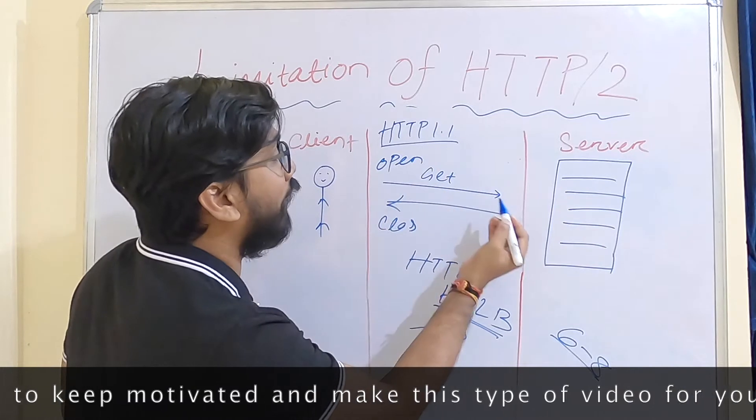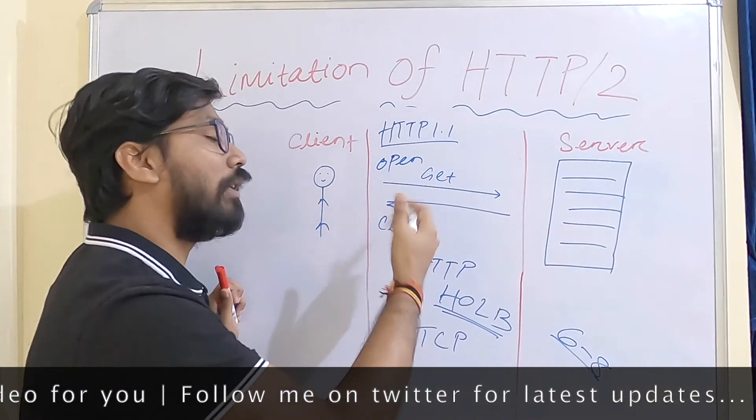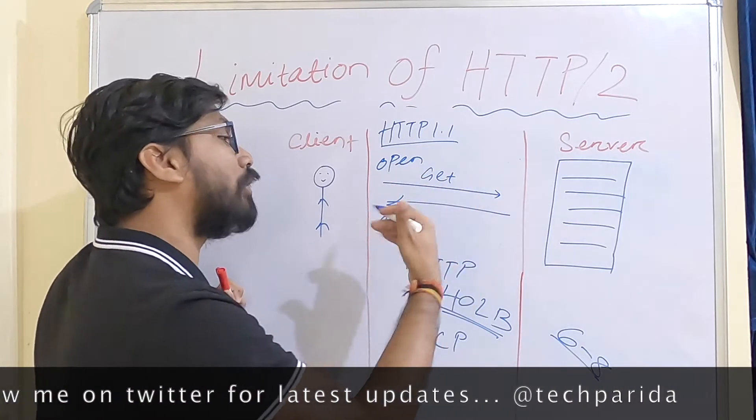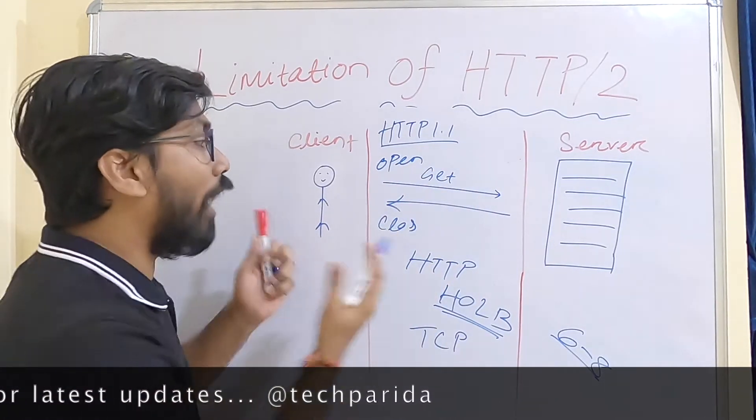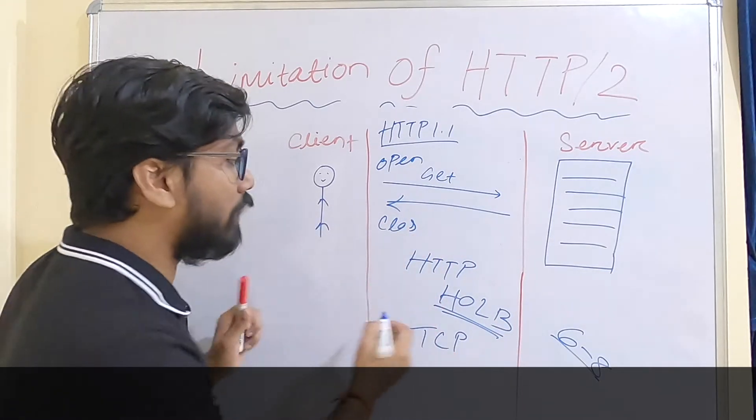Head of line blocking means you have to wait - one request, then you get the response. Until you get the response, you have to wait to send another request. This is called HTTP head of line blocking.